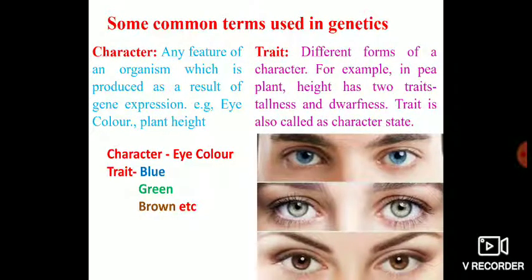Welcome back, dear students. Today I am going to discuss some important terms used in genetics. These terms are so important that without knowledge of them, you may not be able to understand the concepts of inheritance. The first important term is character — character simply means any feature of an organism produced as a result of gene expression. Example: eye color, plant height. When a gene expresses, it leads to a particular character; it is ultimately the function of genes that we have different characters.